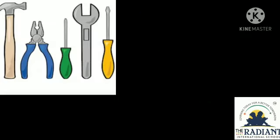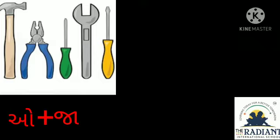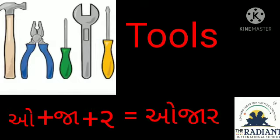ये हैं instruments। Instruments को बोलते हैं ओजार। ओजार शब्द लिखने के लिए हम यूज़ करेंगे — अ को ओ की मात्रा, प्लस ज को आ की मात्रा, प्लस र। ओजार।